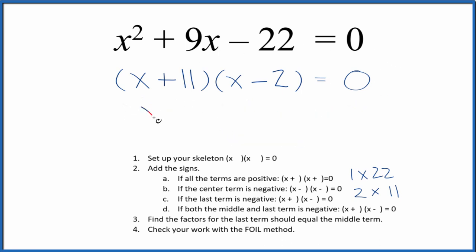We say X plus 11 equals zero, X equals negative 11. X minus two equals zero, X equals two. If you put two in for X and you do the math, all of this equals zero.